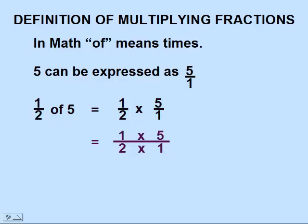When we multiply fractions together we can multiply the two numerators one times five on top and on the bottom we'll multiply the two denominators two times one. That leaves us with five over two or five halves.